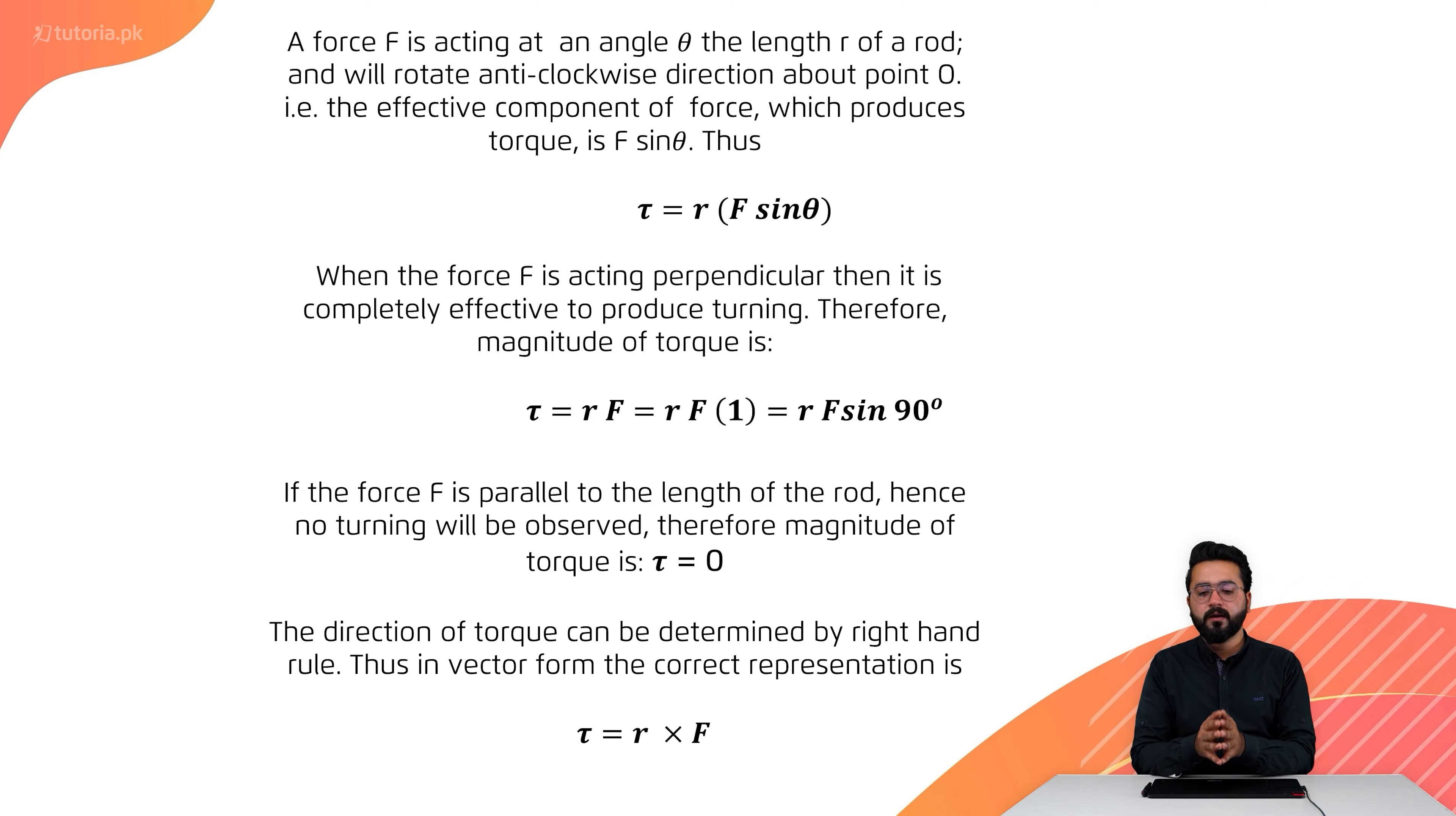When the force F is acting perpendicular, then it is completely effective in producing turning. If the force is perpendicular to the rod, the magnitude of torque is maximum. Since sin 90 degrees equals 1, the torque will be equal to RF.